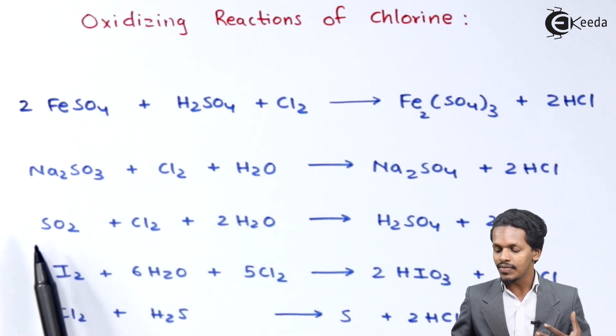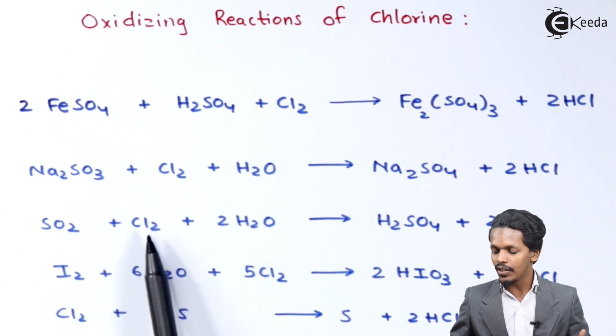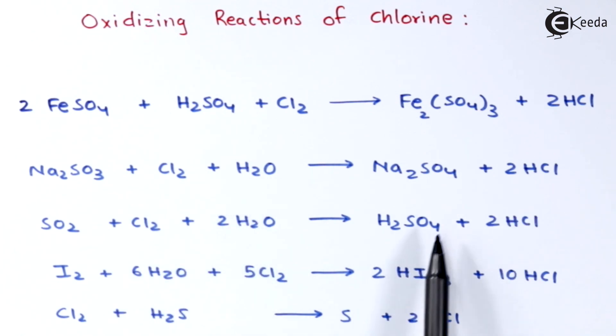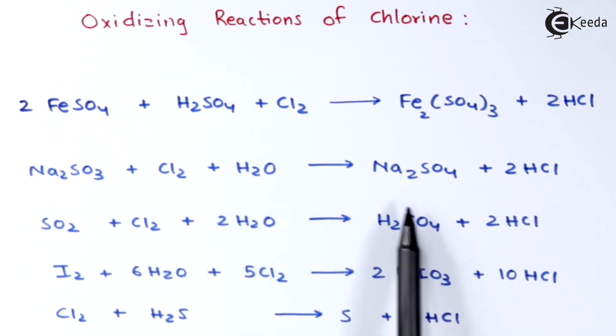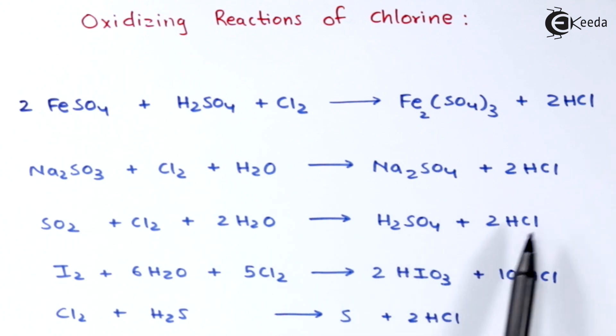The next reaction: whenever sulfur dioxide (SO₂) is treated with Cl₂ in the presence of water, the product we get is H₂SO₄, that is sulfuric acid, along with 2 moles of HCl.